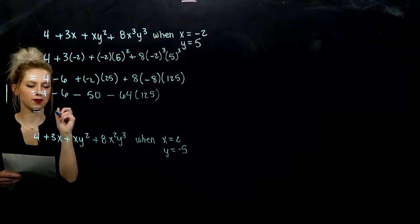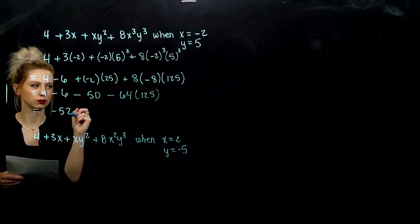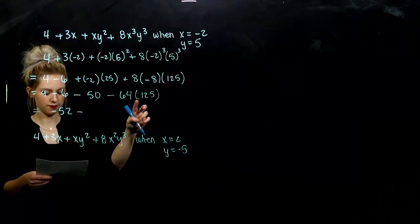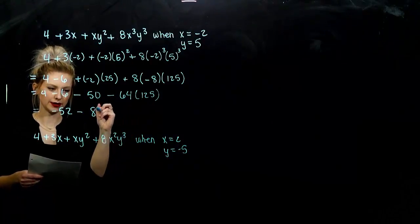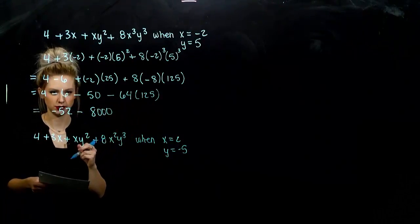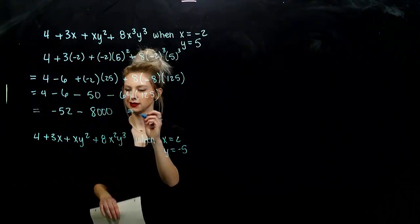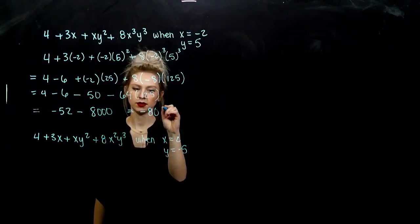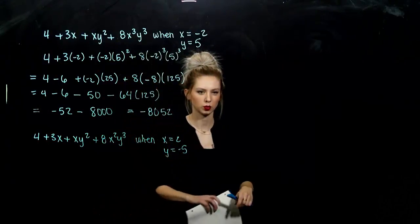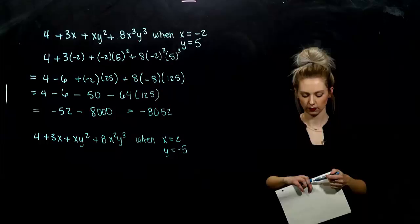I've got 4 and I'm taking away 6. So I'm looking at negative 2. And if I take away another 50, I'm looking at negative 52. And I'm subtracting off of that. This product together is 8,000. So negative 52 minus 8,000 is negative 8,052 when we're all done.